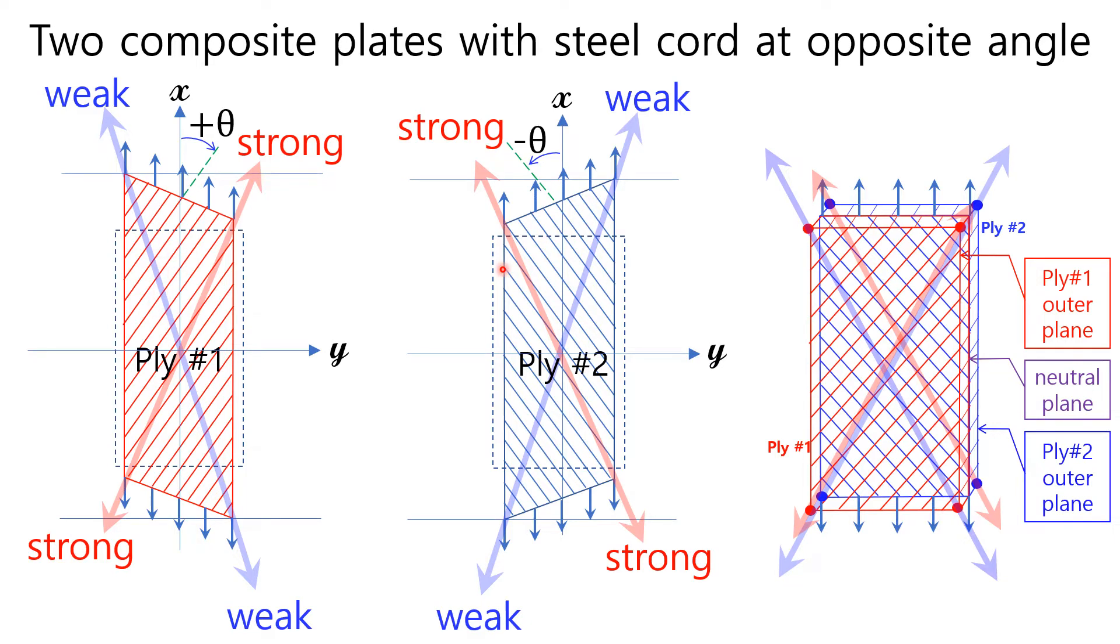Let's call the common plane of Ply 1 and Ply 2 as a neutral plane. When you glue and put together Ply 1 and Ply 2 to make them unified one plate, this type of unified plate is called laminated composite plate. Every one point of neutral plane corresponding Ply 1 and Ply 2 must show the same displacement.